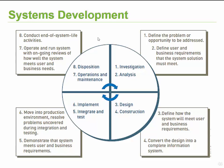Going through this phased approach, companies would generally first define the problem or identify what they're trying to solve. There would typically be a recommendation for a new system based on various inputs, a problem they're trying to solve, or a new opportunity identified for which they need a new system or need to adapt existing systems. Step one: define the problem. Step two: determine the user and business requirements — what do you want the system to do, and what are the objectives of this particular system?